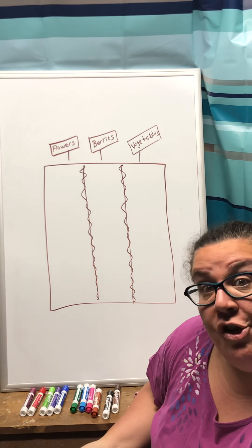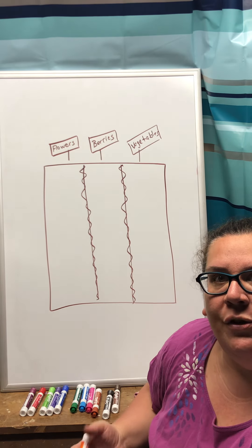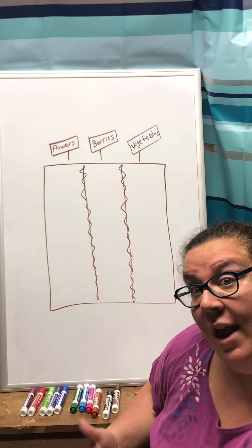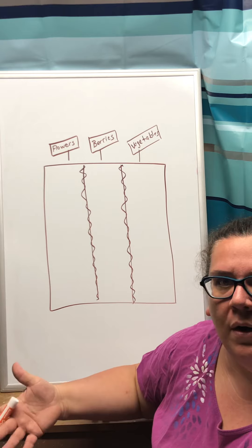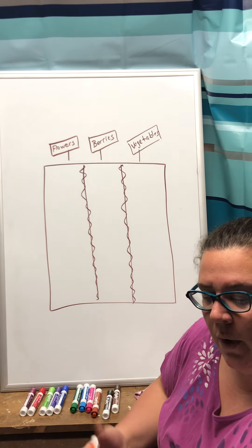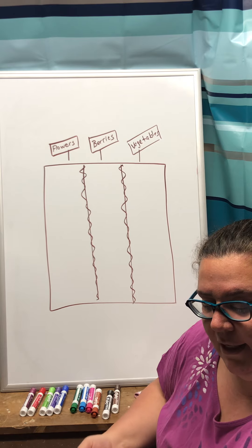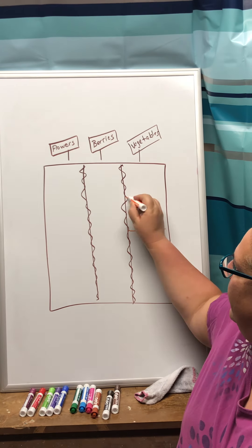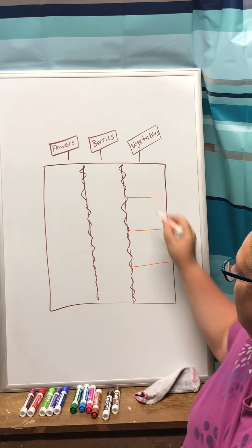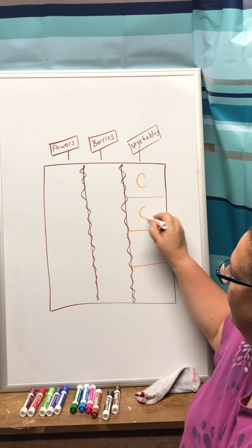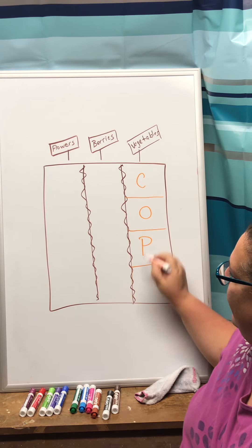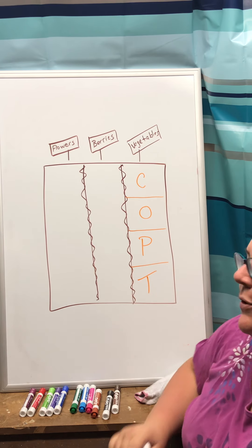Now the vegetable section they're cutting into four different parts because they want to grow four different vegetables. So in the vegetable section they have carrots, onions, peppers, and tomatoes.